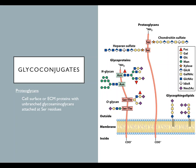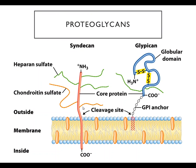Proteoglycans are important parts of the extracellular matrix and are also found on the surface of many cells. Most proteoglycans are proteins that have long unbranched glycosaminoglycans of one kind or another attached at specific serine residues. Syndicans are one category—these are membrane proteins, meaning the protein is actually embedded in or spanning the membrane, and they contain a combination of heparin sulfates and chondroitin sulfates.